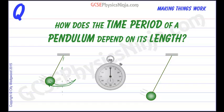The easiest way to time that accurately is to time 20 oscillations using a stop clock or a stopwatch. Count 1, 2, 3 and so on, and then once you've timed 20 oscillations, divide by 20 to find an average oscillation time — an average time period.